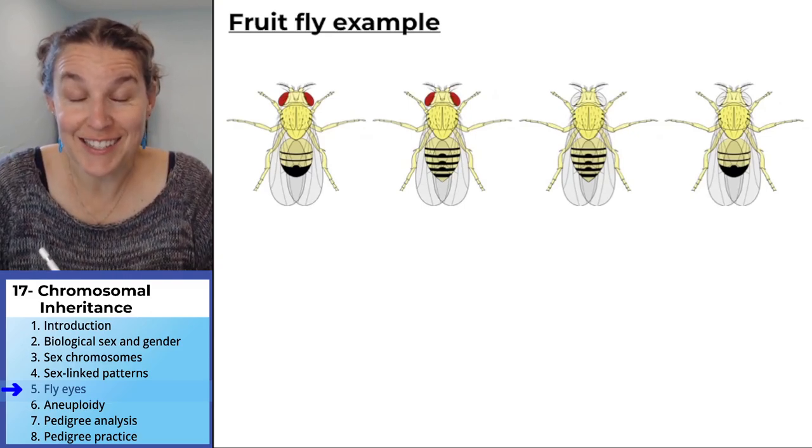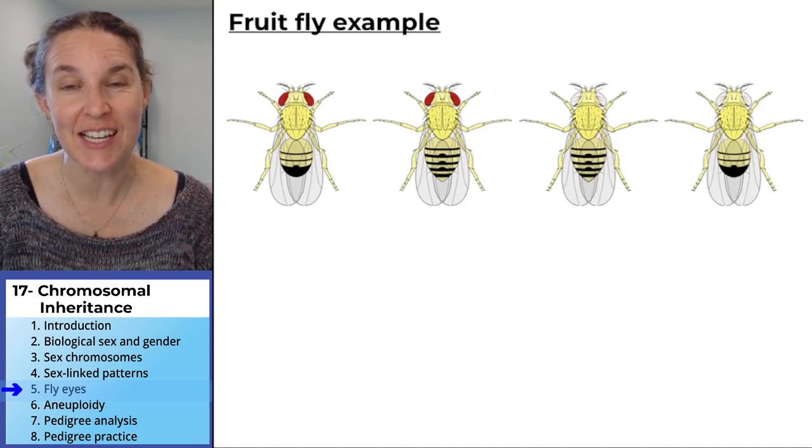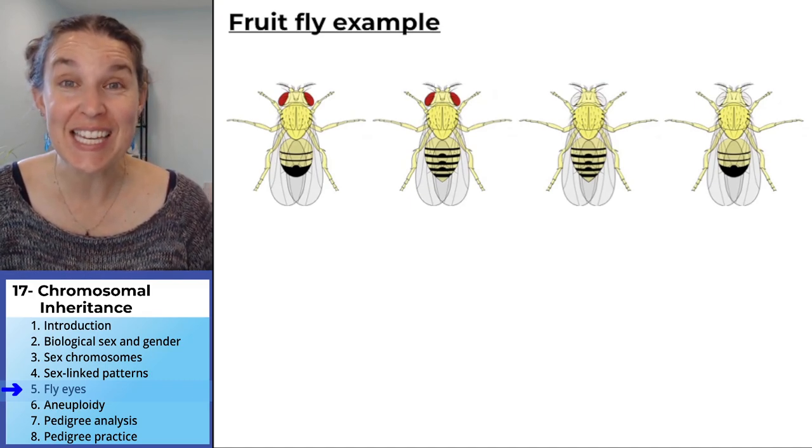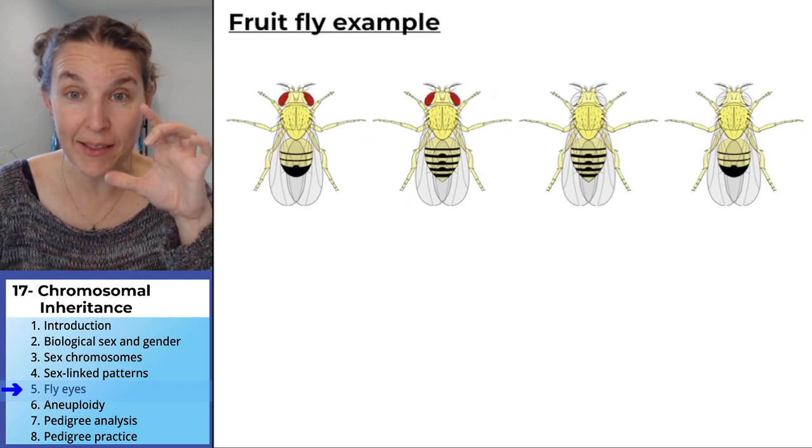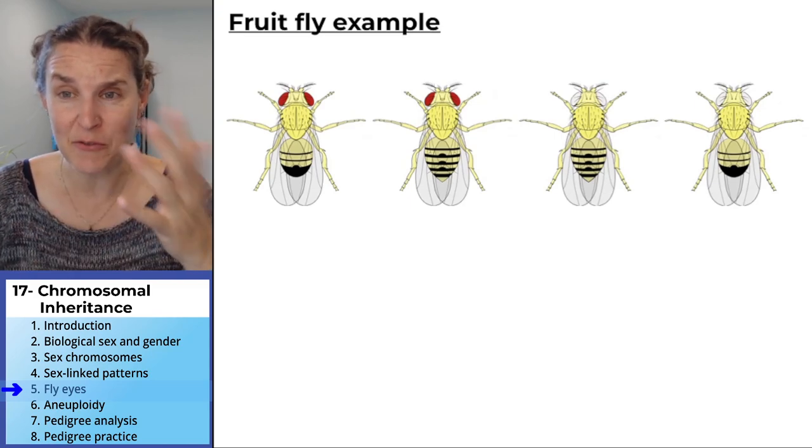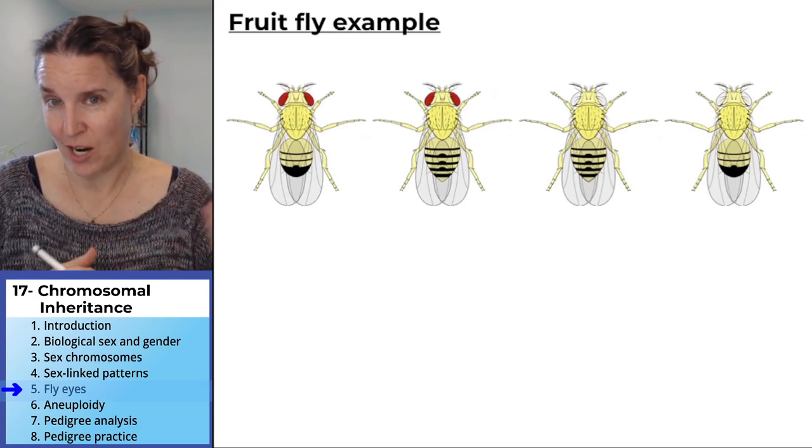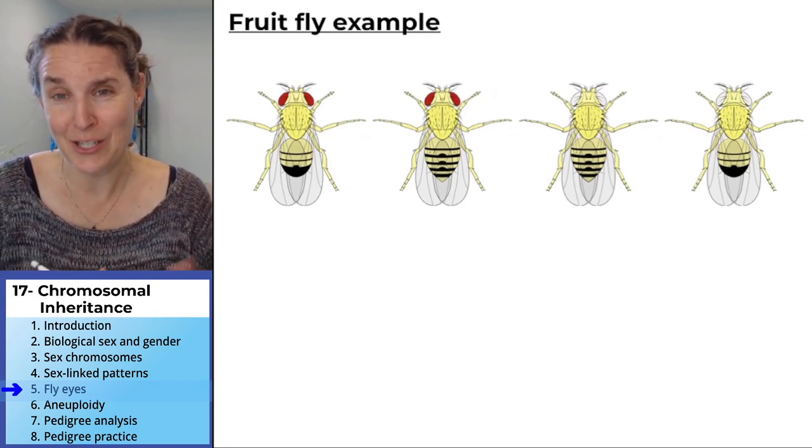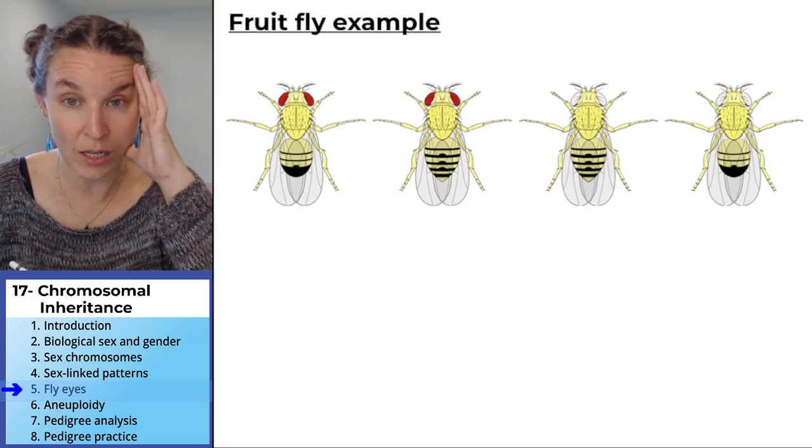Okay, fruit flies have all sorts of really interesting characteristics and they're really easy to breed. You can make little vials of fruit flies and buy different kinds of fruit flies and then do all sorts of genetic crosses, which is really interesting and kind of fun to do.